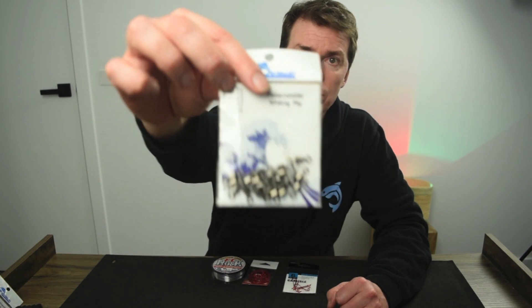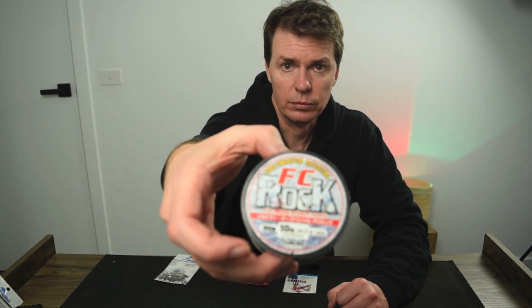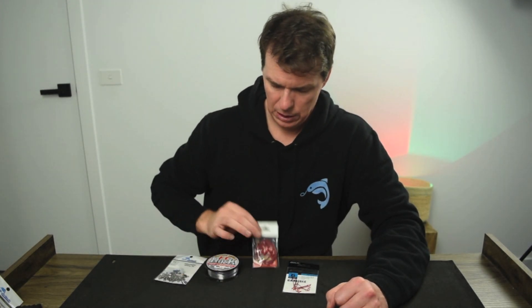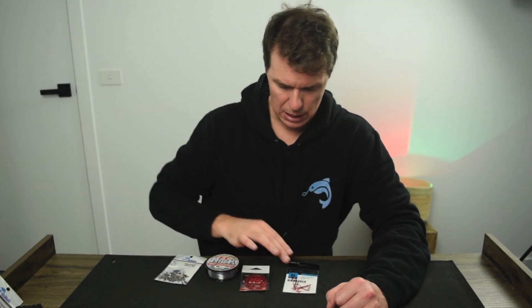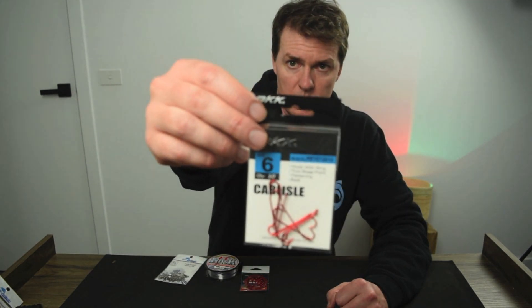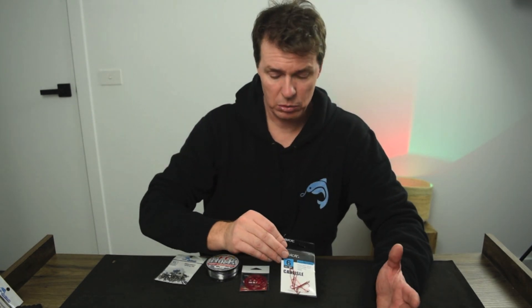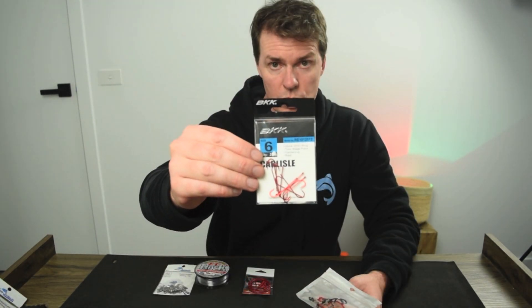To make the simple running sinker rig for whiting you'll need the following items. You'll need some small swivels, some fluorocarbon leader, some beads and some tubing and you'll want some size 6 long shank hooks, size 4 whatever suits you. An alternative to the long shank hook is circle hooks.